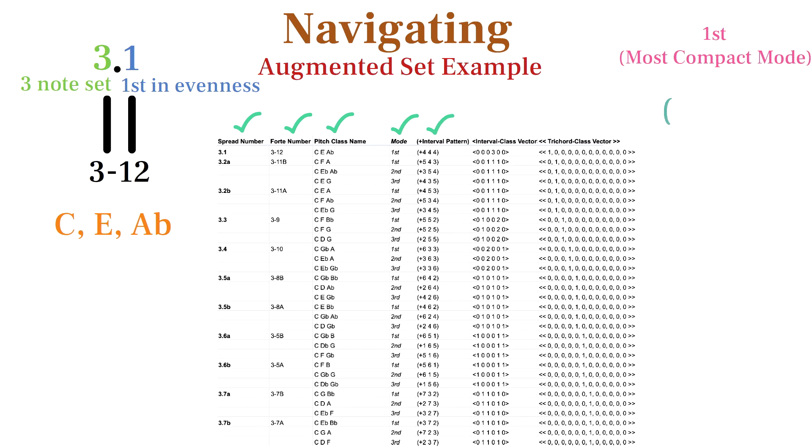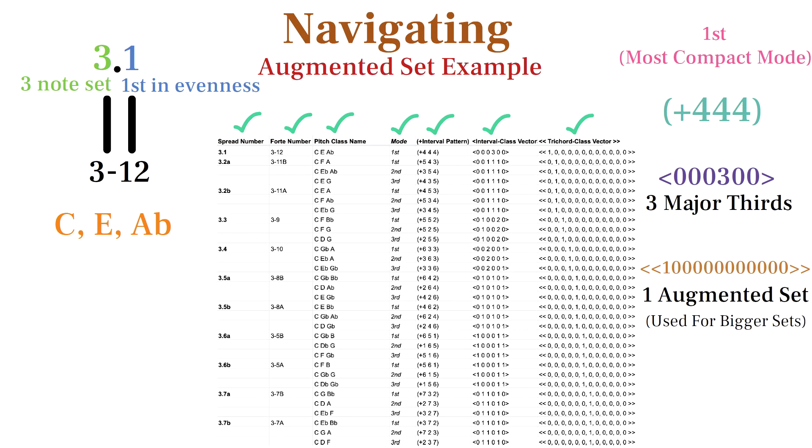Then we have our interval pattern, interval vector, and then a trichord vector which is something we experimented with that's probably not too useful, but it displays the total amount of three note chords in a set, starting with augmented chords and ending with a chromatic cluster.